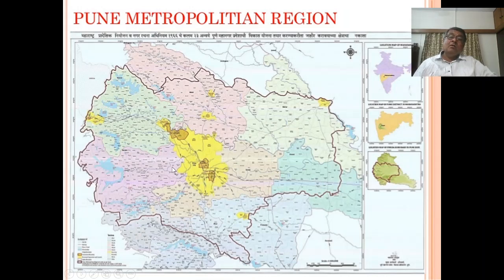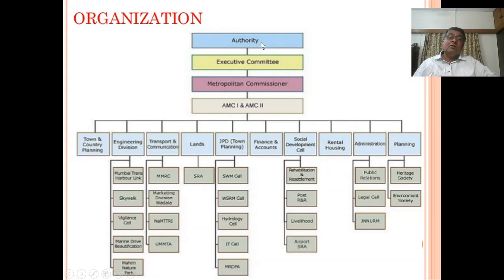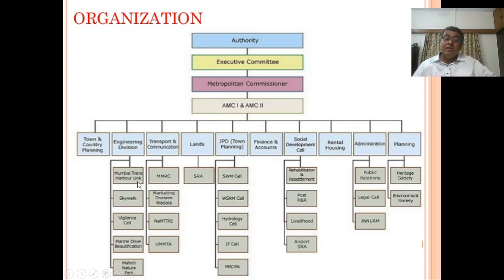The organizational structure of PMRDA: Executive Committee, then Metropolitan Commissioner, then Assistant Metropolitan Commissioner 1 and 2. Various departments include Town and Country Planning, Engineering Division, Transport and Communication, Land, Joint Town Planning, Joint Planning Observer, Finance and Accounts, Social Development, Council Rental Housing, and Administration Planning. Under engineering there are sub-departments for Mumbai-Thane Harbour Link, Skywalk, Vigilance, and Civil works. Under Transportation, Land, JPO, Social Development, Administration, and Planning there are further sub-departments including Public Relations, Legal, JNNURM, etc.